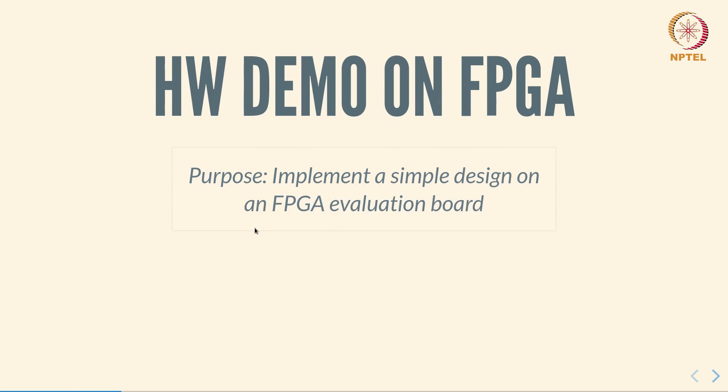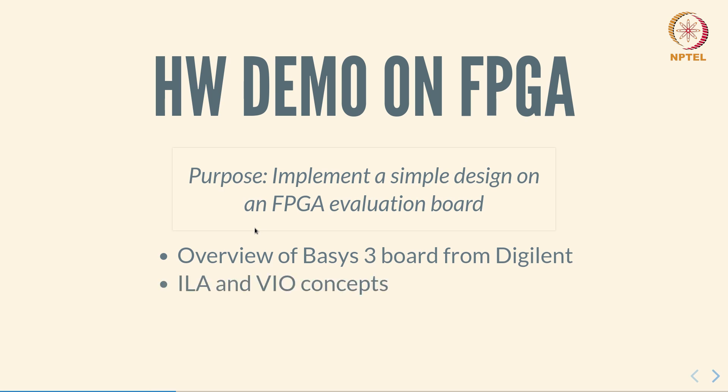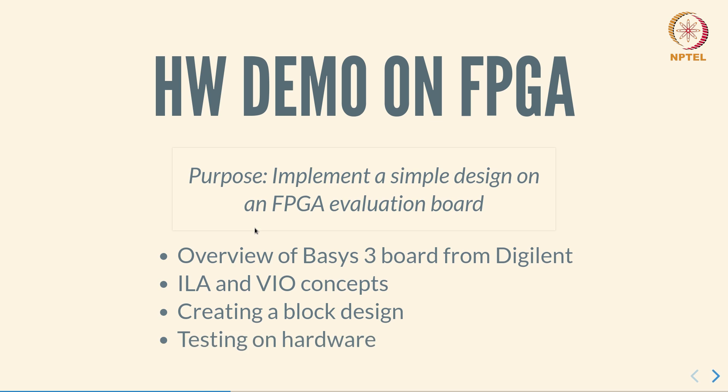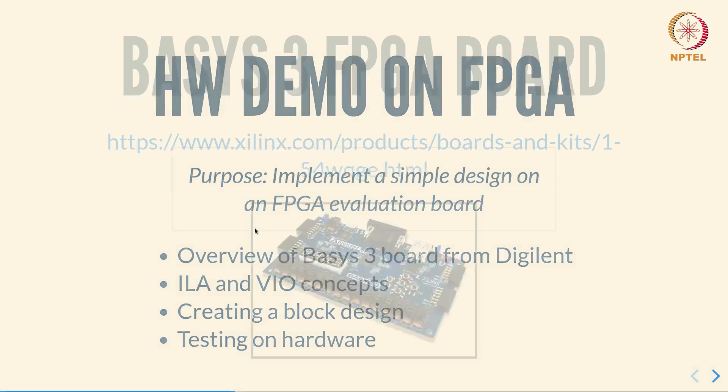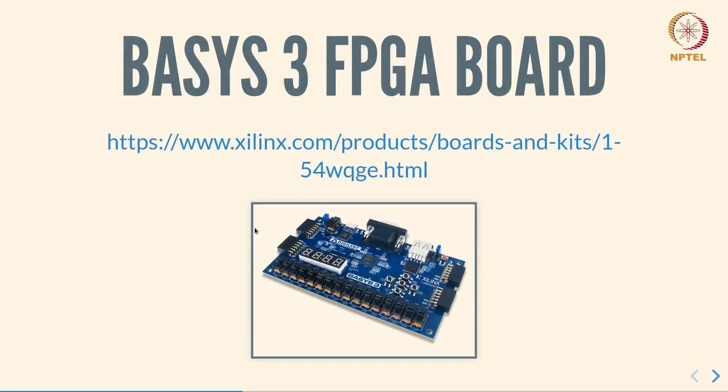In this video we are going to demonstrate implementation of a simple design on an FPGA evaluation board. We will first look at an overview of the Basys 3 board from Digilent which will be used for this exercise. If you do not have access to this board but have access to some other FPGA board, you can still perform the same experiments, but you will have to adapt appropriately. The board that we are using is the Basys 3 FPGA board.